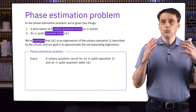What we'll do next is to generalize this procedure in a natural way, using however many control qubits we choose. By adding more control qubits, we'll be able to get more and more accurate approximations of theta. That will be the general phase estimation procedure. In order to generalize from two control qubits to however many we choose, we need to understand how the quantum Fourier transform is defined for other dimensions, and how it can be implemented with a quantum circuit.